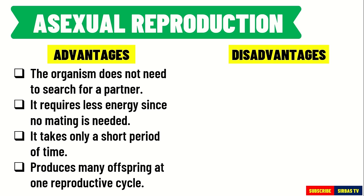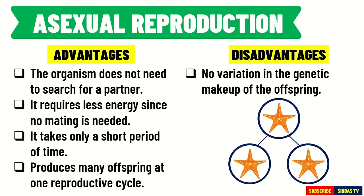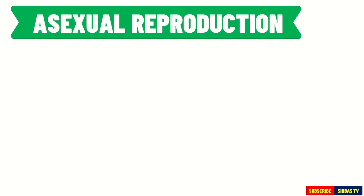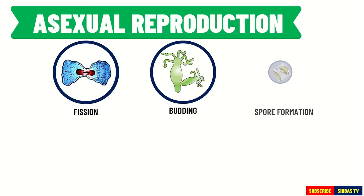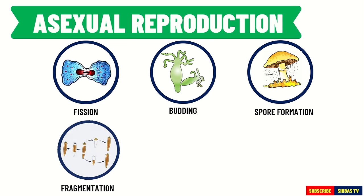Because of this, a parent organism can produce many offspring at one reproductive cycle. On the other hand, the disadvantage of asexual reproduction is that there is no variation in the genetic makeup of the offspring. The offspring inherits the weaknesses of the parent. For instance, if the parent carries a disease or is prone to certain diseases, then the offspring can be susceptible to that disease. Some types of asexual reproduction include fission, budding, spore formation, fragmentation, and regeneration.